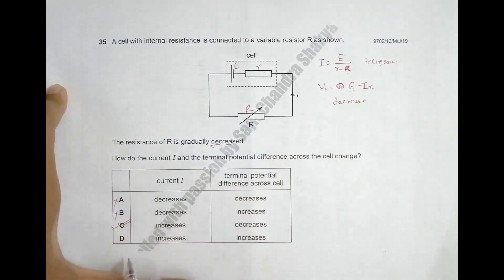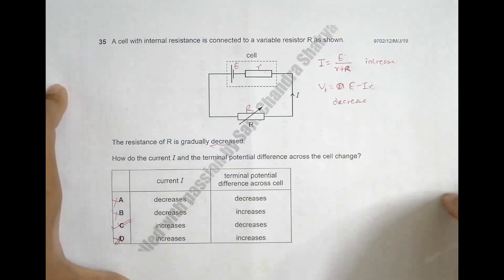That means the correct choice should be C. Choice D also disqualifies, so C should be the correct choice.